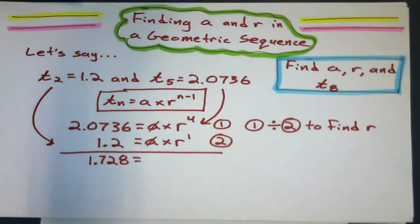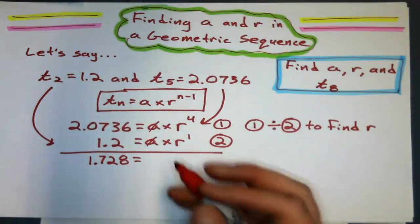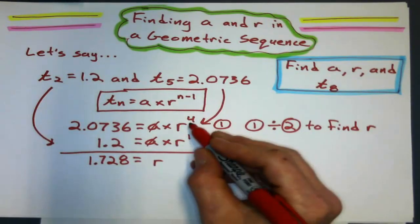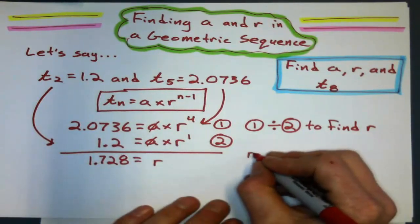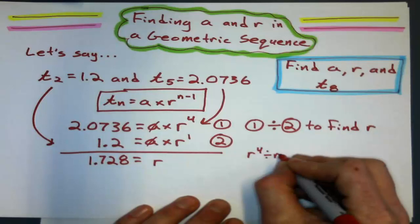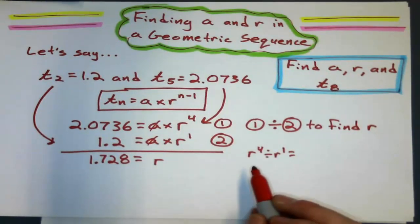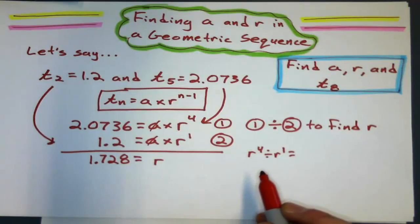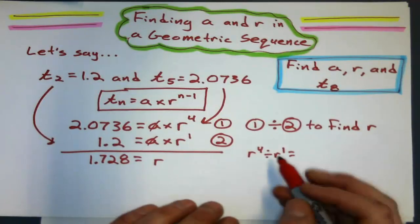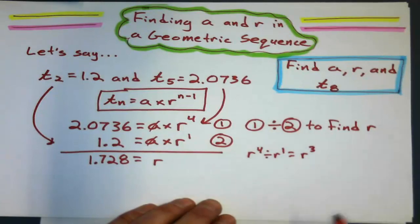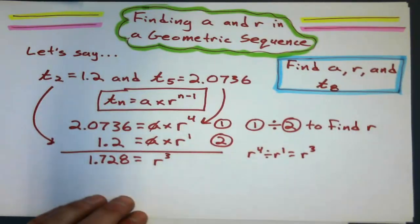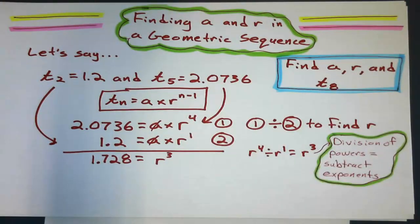Now here, r⁴ divided by r¹. We need to remember, dividing powers, what do I do with the exponents? Subtract them, not divide them. This is r³. Cubed. All right, moving on.